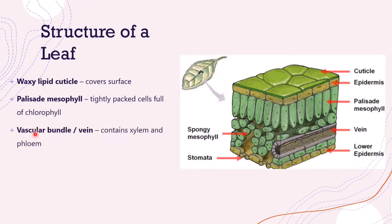Then we have our vascular bundle or vein. This contains our xylem and phloem tubes to provide these cells with the correct substances needed for their normal cellular activities and reactions like photosynthesis.